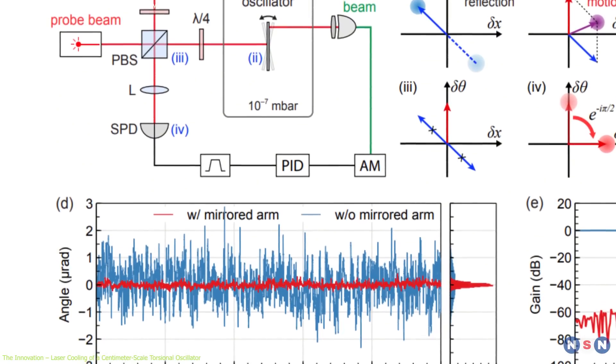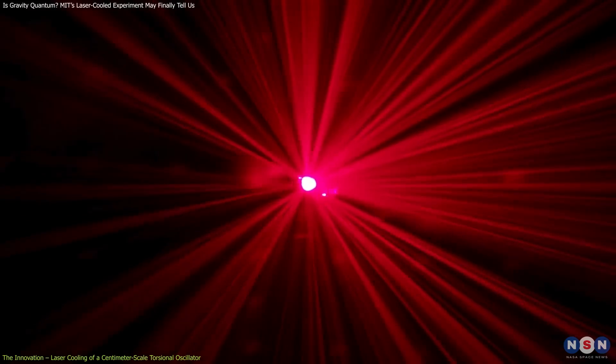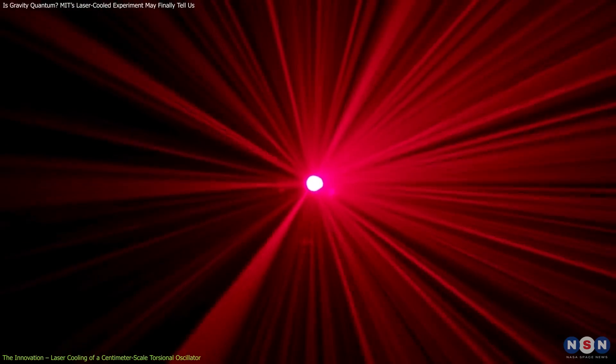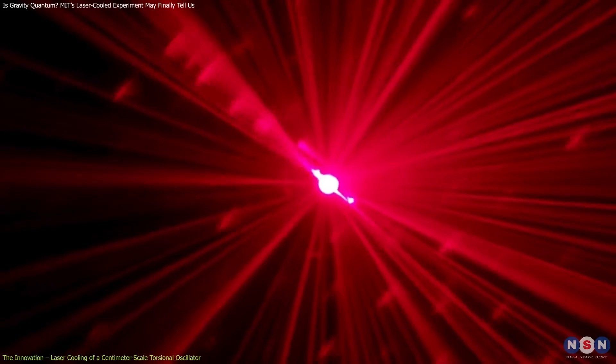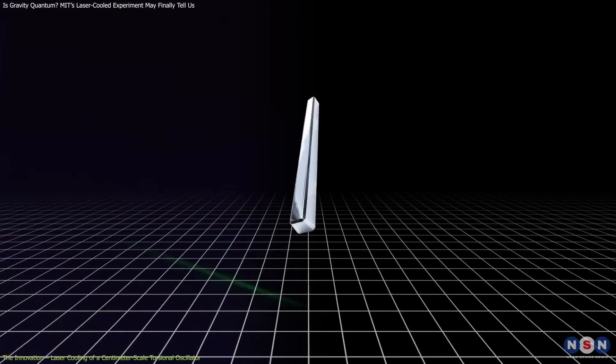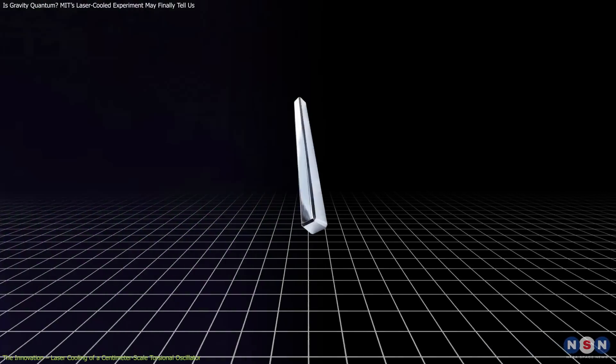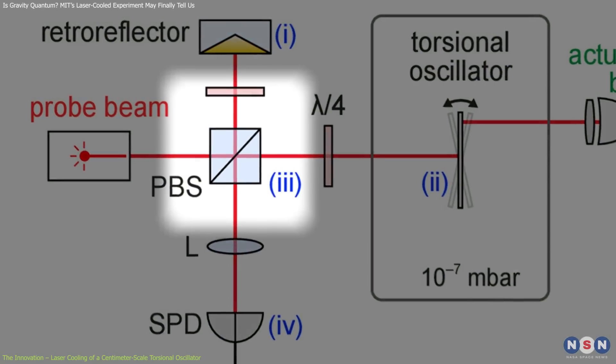But such precision comes with challenges. Laser beams are not perfectly stable. Air currents, mechanical vibrations, and imperfections in the optics all introduced jitter—false signals that can make it seem like the oscillator is moving when it isn't. To overcome this, the team used an ingenious solution.